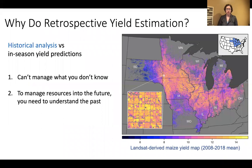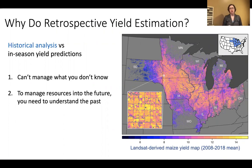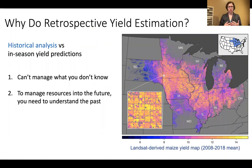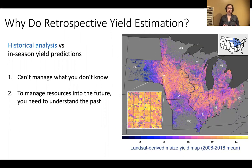My work really focuses on retrospective yield estimation looking at historical analysis, which is a little different than the related problem of making in-season yield predictions. The purpose of this is twofold: you can't manage what you don't know. In order to manage resources into the future, you need to understand the past. By having long historical data sets, you can analyze yield gaps or yield heterogeneity and figure out what type of interventions might be successful.